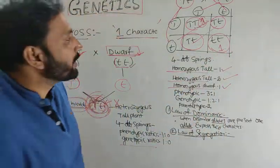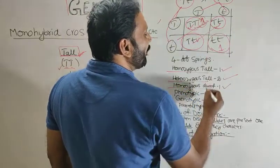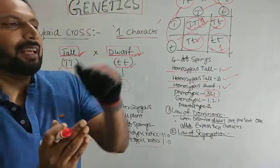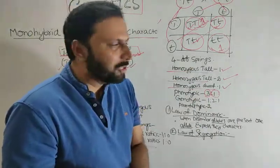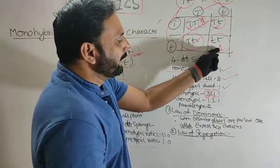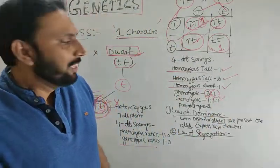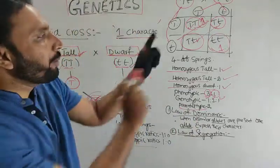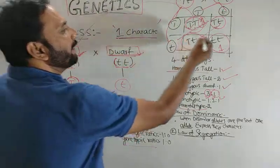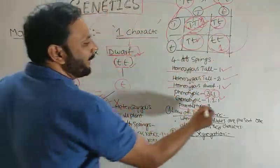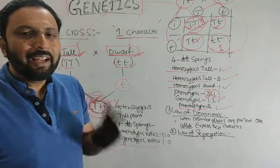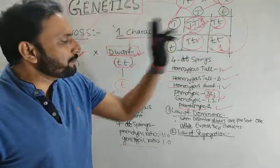The phenotypic ratio: TT is tall, Tt is tall, Tt is tall — three tall and one dwarf. Phenotypically, that is the physical appearance. The genotypic ratio: one homozygous tall, two heterozygous tall, one homozygous dwarf. The parental types are two — homozygous tall and homozygous dwarf. Recombinants are also two. So parental types are two and recombinants are two, out of four.